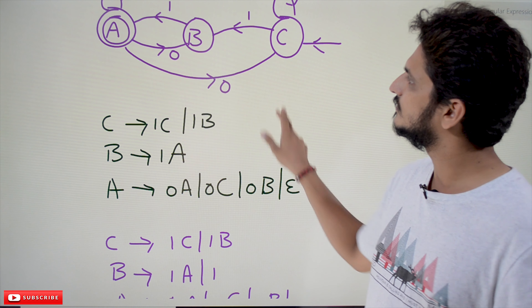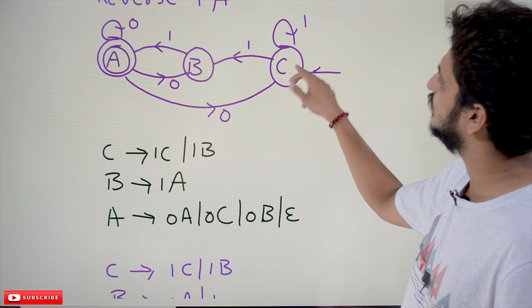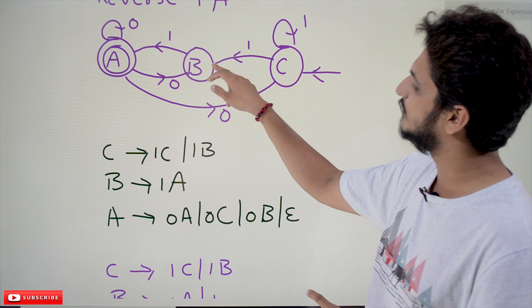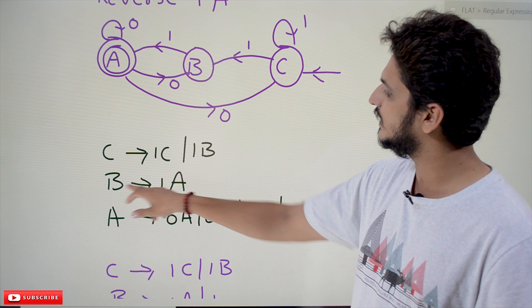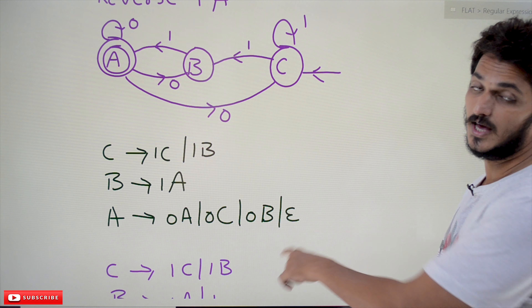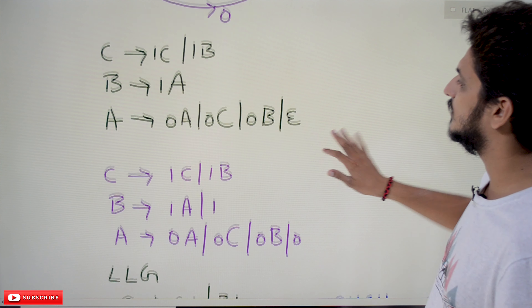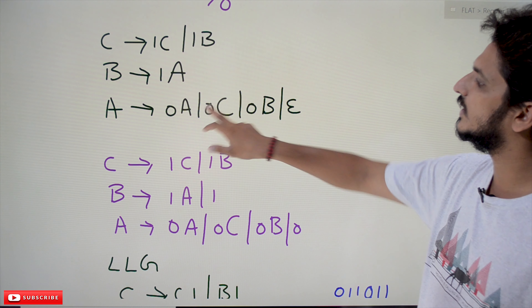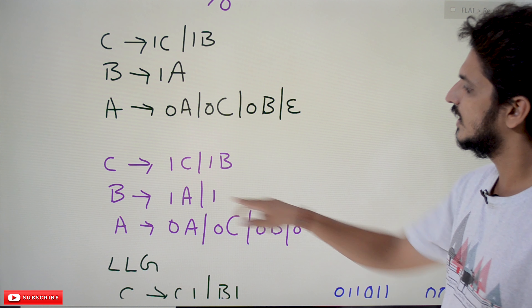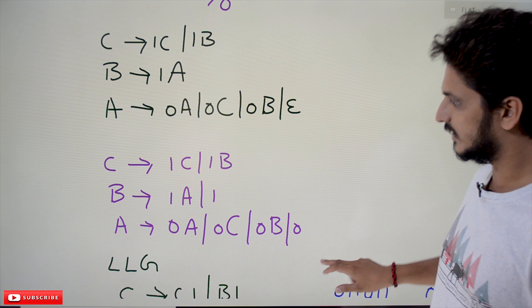For this reversed finite automata, write the right linear grammar. It starts from C: on taking one we end at C, on taking one we end at B, so C → 1C and C → 1B. For B: B → 1A. For A: A → 0A, A → 0C, A → 0B. For A being the final state, add epsilon. Eliminating epsilon: substitute epsilon wherever A appears, giving extra productions zero and one.